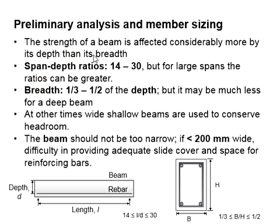The span-to-depth ratio, referring to the ratio of L divided by d, should be ranging between 14 to 30. For larger span beams, the ratio can be greater.